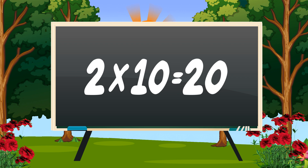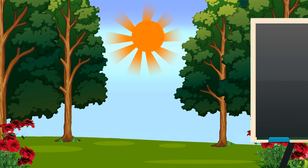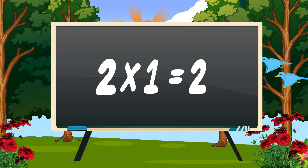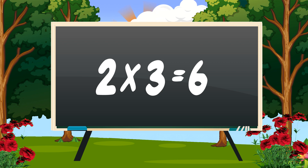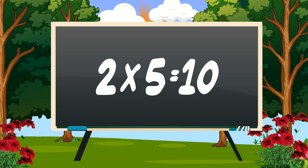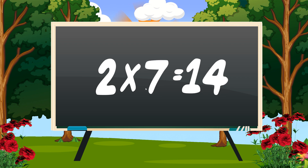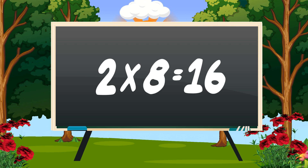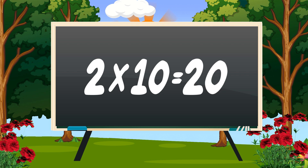Two ones are two, two twos are four, two threes are six, two fours are eight, two fives are ten, two sixes are twelve, two sevens are fourteen, two eights are sixteen, two nines are eighteen, two tens are twenty.